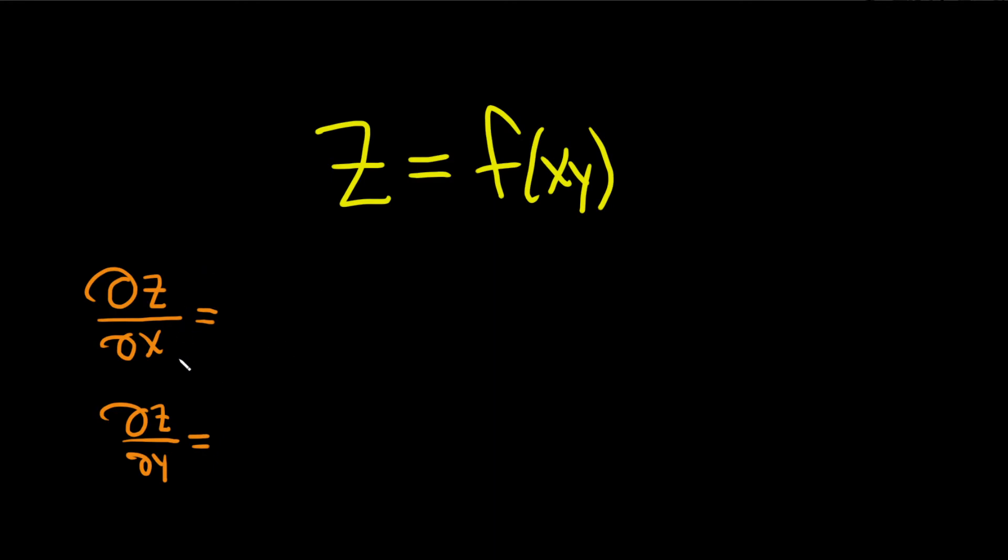So when we're finding the partial of z with respect to x, we have to keep in mind that all of the other variables are constants. So in this case our y is a constant.